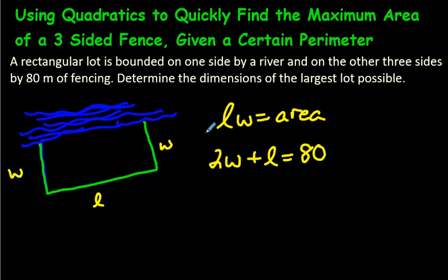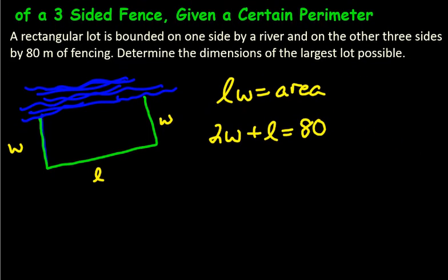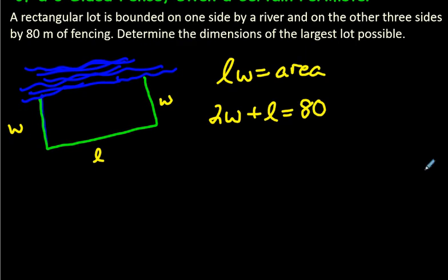Now so far, this doesn't really look quadratic at all, does it? It doesn't look like something that would make a parabola, which is what we call a quadratic. And we're going to try and make that situation here. One way we can do this is to get L, see this L right here? Solve for L, and then substitute it into this equation up here.